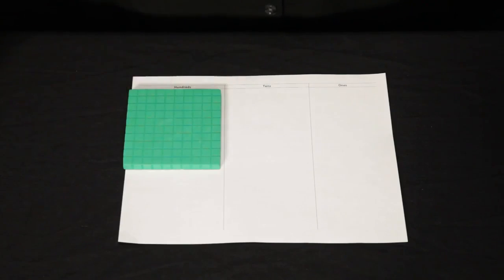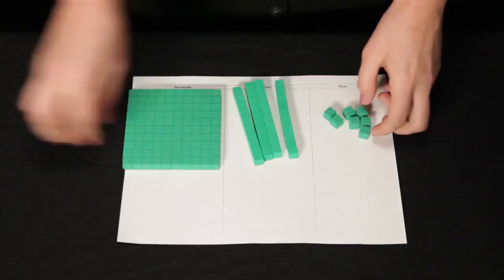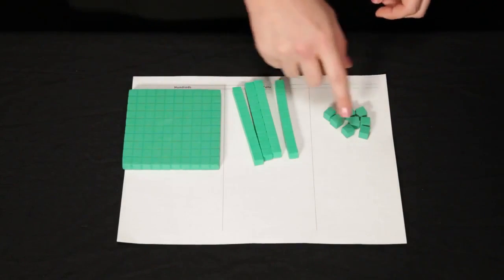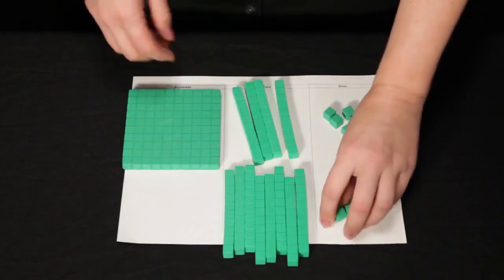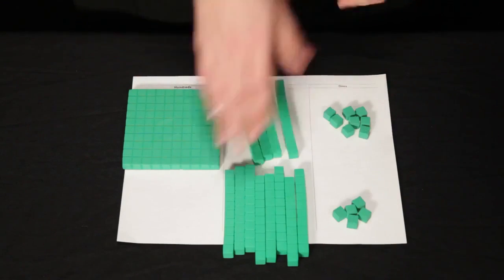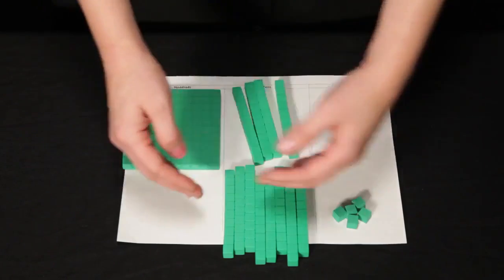We can use the base 10 blocks to model the problem 148 plus 85. First I'll show 148. And to that I will add 85. 8 tens and 5 ones. So I've modeled 148 plus 85.